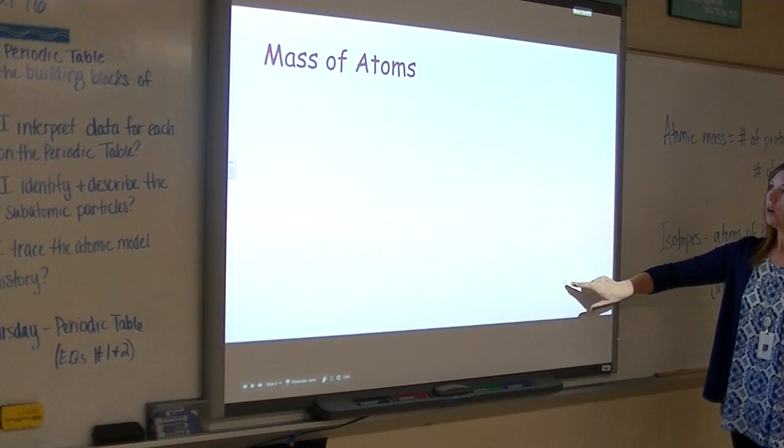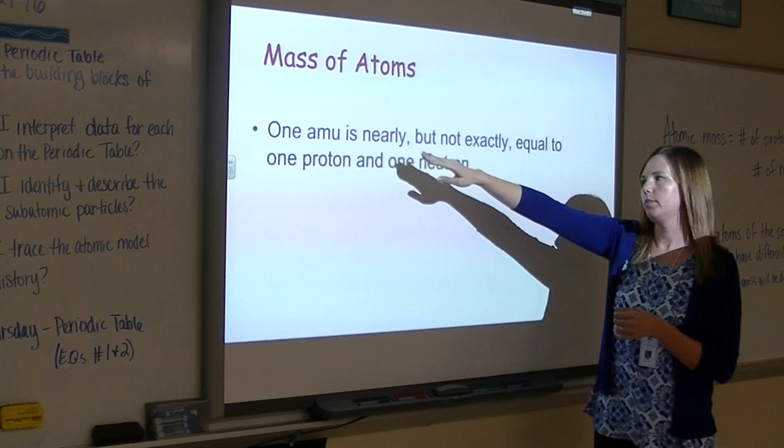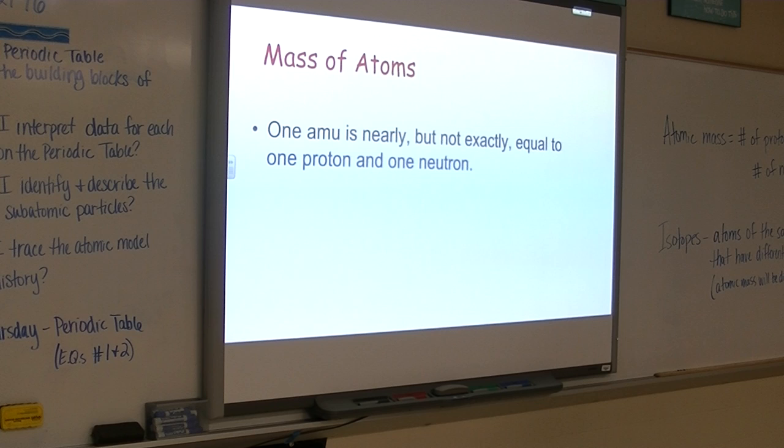So one of the things that I wanted to bring back up, which is kind of like a bridge between our essential questions, is the atomic mass unit. Now we talked about this briefly yesterday. We're going to talk about it again. One atomic mass unit, one AMU, is basically, not exactly, but close to one proton or one neutron. We talked about how the mass of a proton and a neutron are about one.